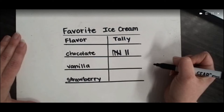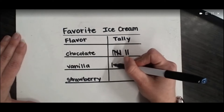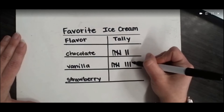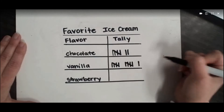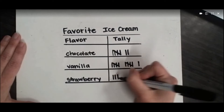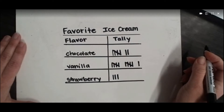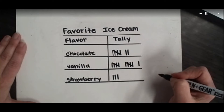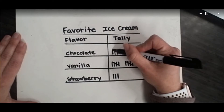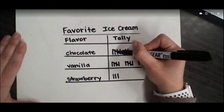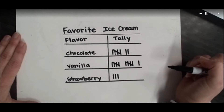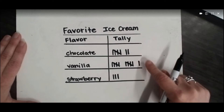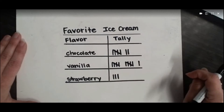With vanilla, eleven students chose vanilla, so I'm going to do one, two, three, four, five, six, seven, eight, nine, ten, eleven. And only three students chose strawberry. Tally marks are a great way to collect information — maybe you're going around talking to people and getting one answer at a time. Just remember, every time you get to that fifth one you cross and close the gate and start a new set. We can look quickly at this pictograph and see that seven chose chocolate, eleven chose vanilla, and three chose strawberry.